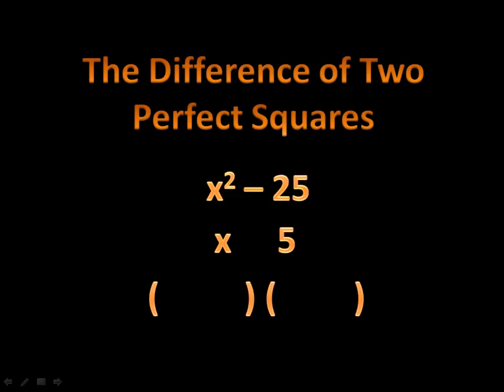Then all we have to do is write our set of parentheses and we put in the first one, x plus 5. In the second one, x minus 5. These opposite terms are called conjugates. When we have the same numbers, x and x, 5 and 5, but the signs are reversed, those are called conjugates and we learned about those when we worked on square roots.